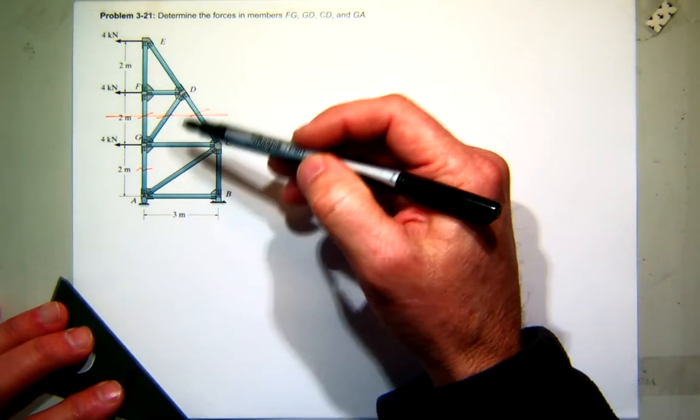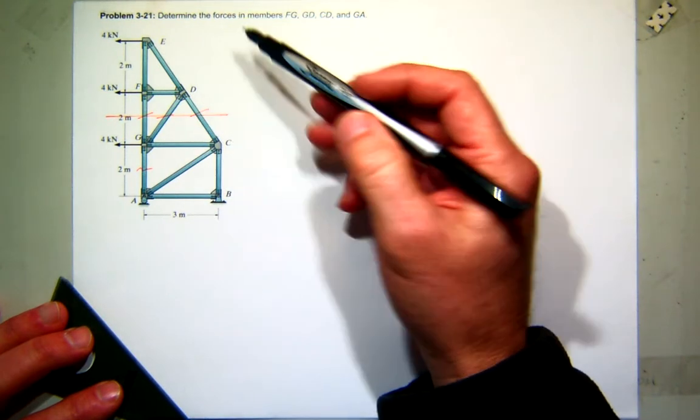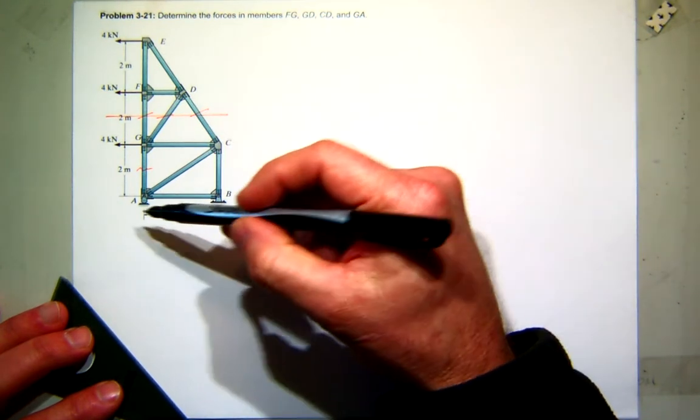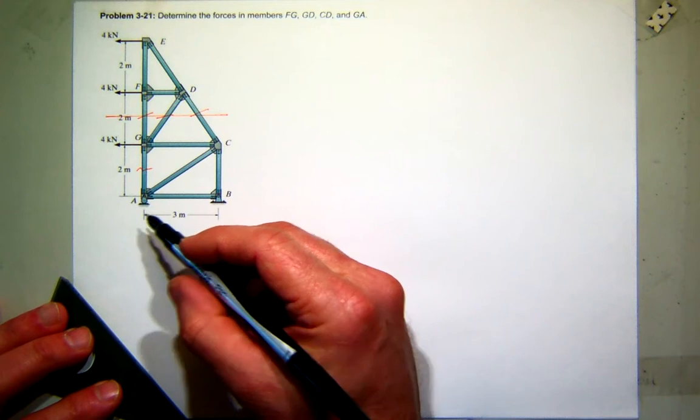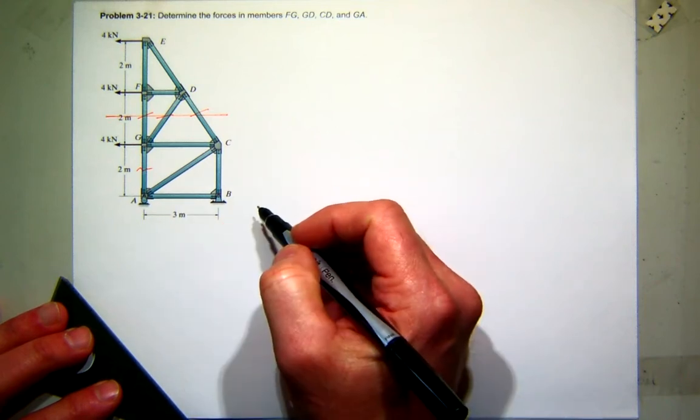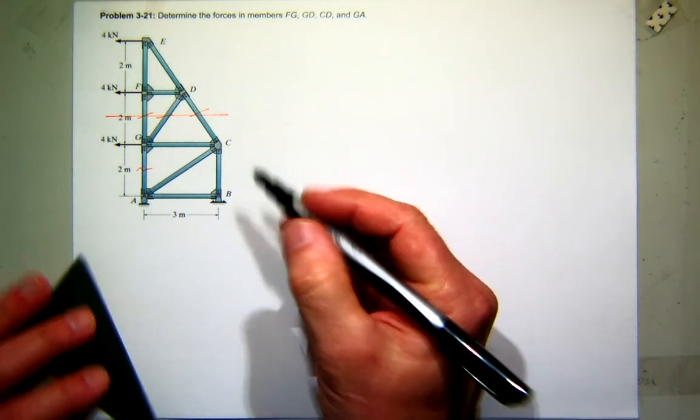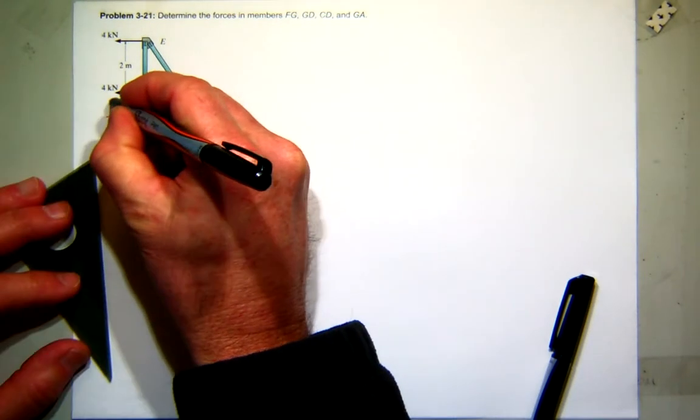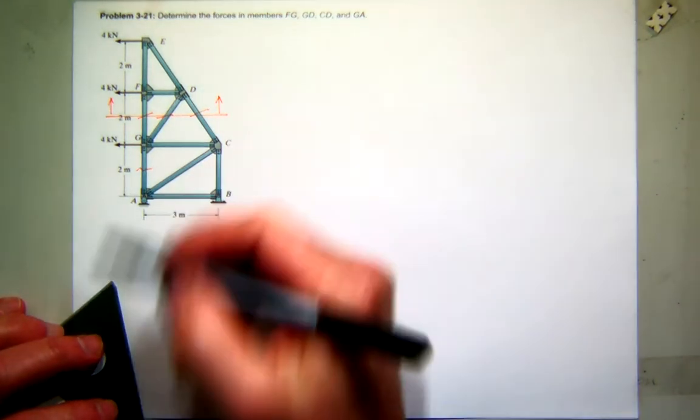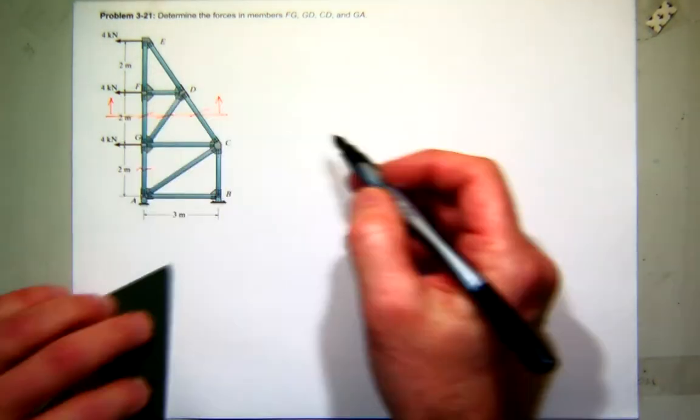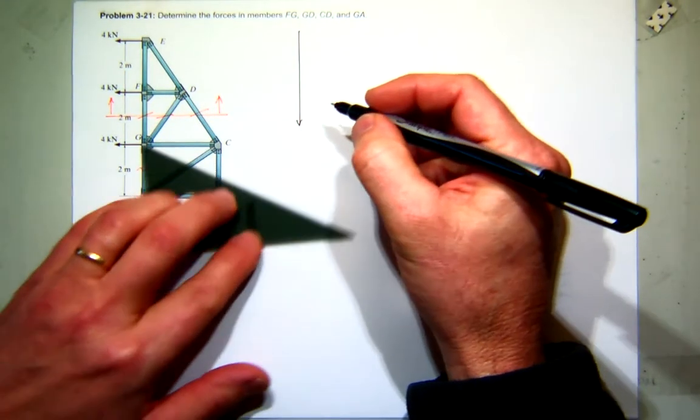So now I'm looking at this structure. There is an advantage about whether you want to do the top part of the structure or the bottom part. What do you think that advantage would be if you did the top part? Yeah, you don't need these reactions. Now these reactions are doable. There's two here at the pin and one at the roller, so you could find those. I think a couple of your homework problems have had pins and pins, which if you try to do a whole free body you won't be able to find all four of them, and that kind of slows you down.